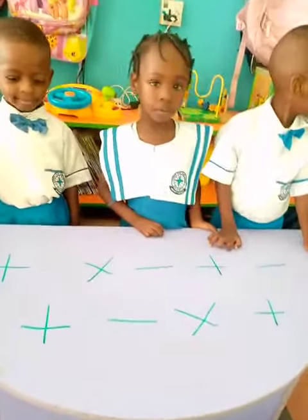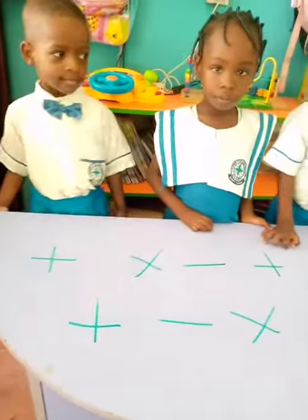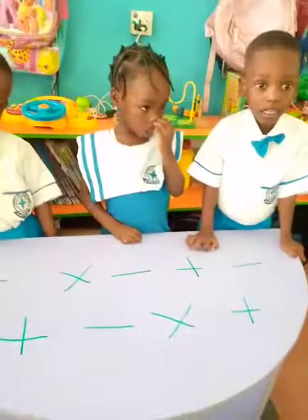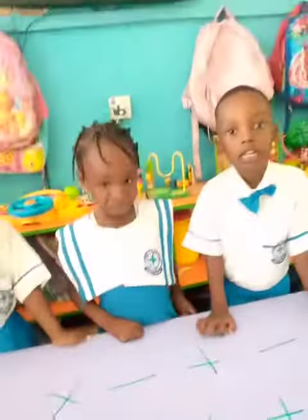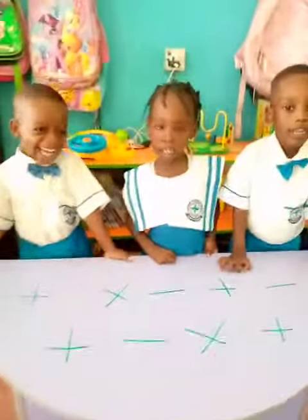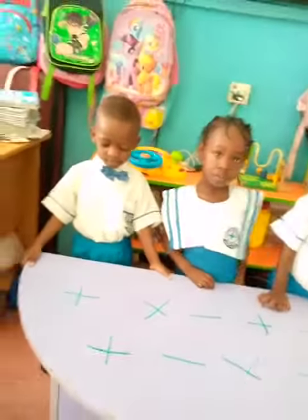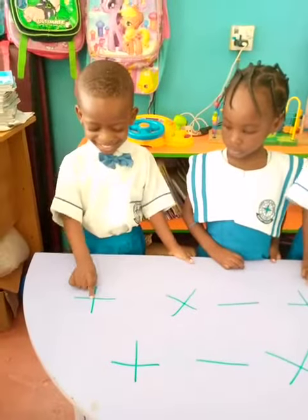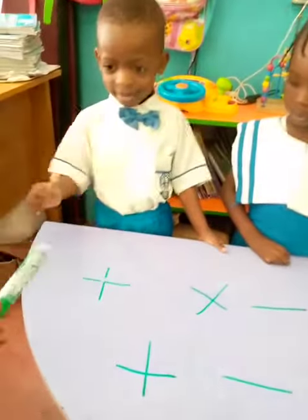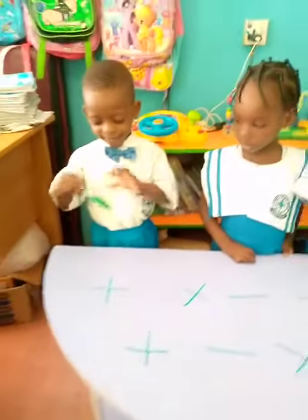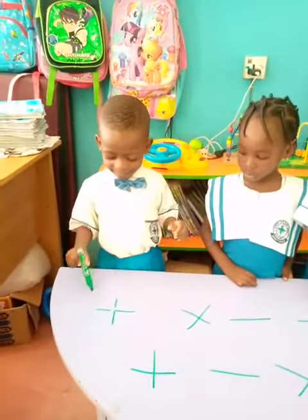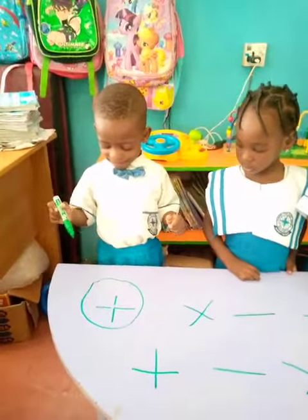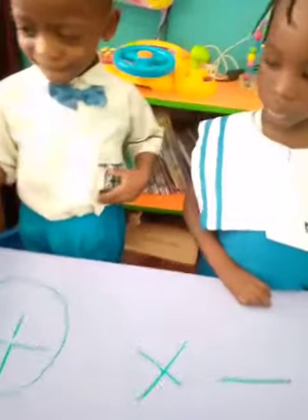We have some signs, some mathematical symbols. I want you to identify plus for me. Are you ready? Yes. So let's start with Dominion — identify plus, where is plus? That's plus, so take circle your plus, circle it. Very good, you are dealing with plus this week — addition. Thank you. Let's clap for Dominion.